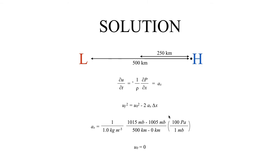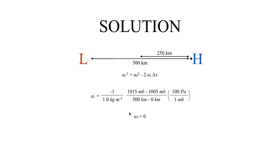Since our air parcel is initially at rest, the initial velocity is just zero. If we take all the information and plug that into our kinematic equation, we get u² = 0² - 2 × (1/(1.0 kg/m³)) × (10000 Pa / 500 km) × (250 km).